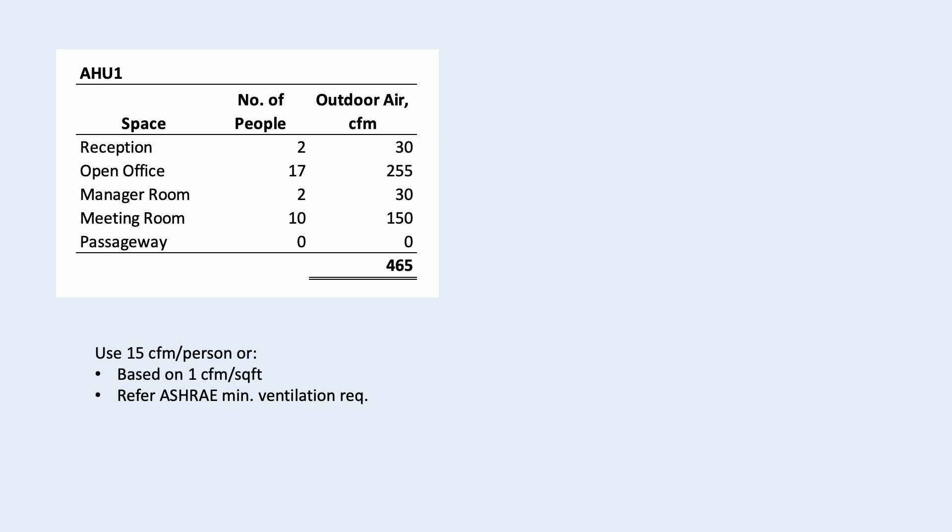As for how much outdoor air is required, we can use a general 15 CFM per person. Alternatively, we can use 1 CFM per square foot or refer to ASHRAE minimum ventilation requirement. If our total outdoor air is 465 CFM as shown, the outdoor air ratio is 20%.